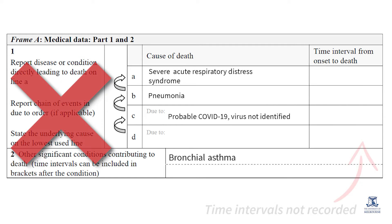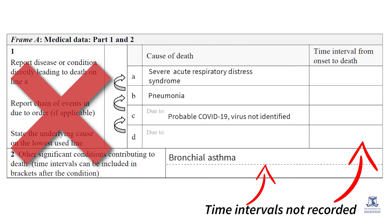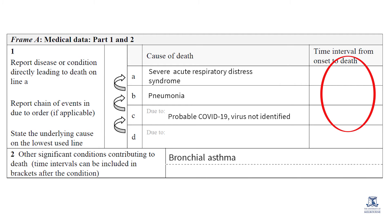Another common error is a lack of documentation of time intervals between each condition and death. Time intervals are very useful in the coding of certain conditions. For example, to decide whether a stroke is coded as an acute case or a sequelae of stroke, the time interval is helpful. Time intervals in Part 1 of the certificate, when correctly reported, are always in a descending order from the bottom upwards, and may also be useful for the certifier to check the accuracy of the sequence.